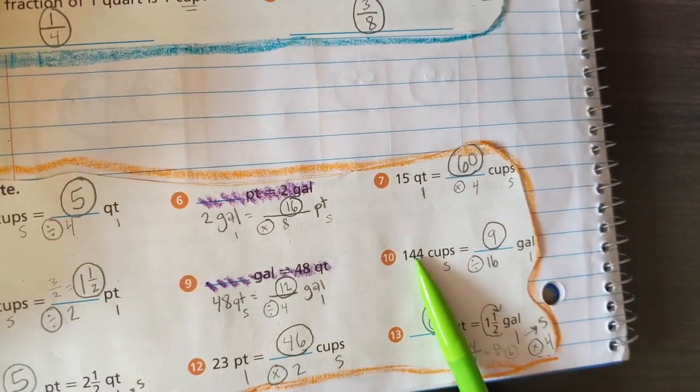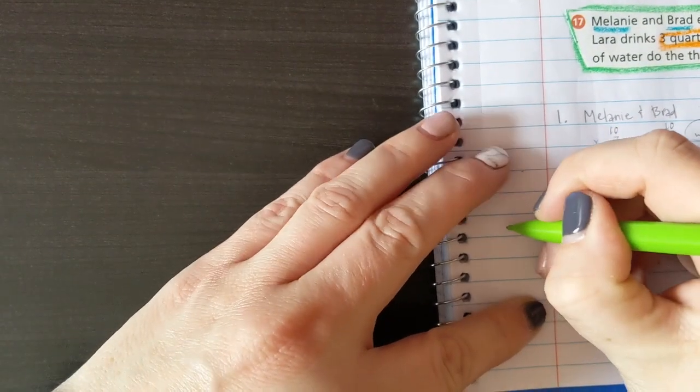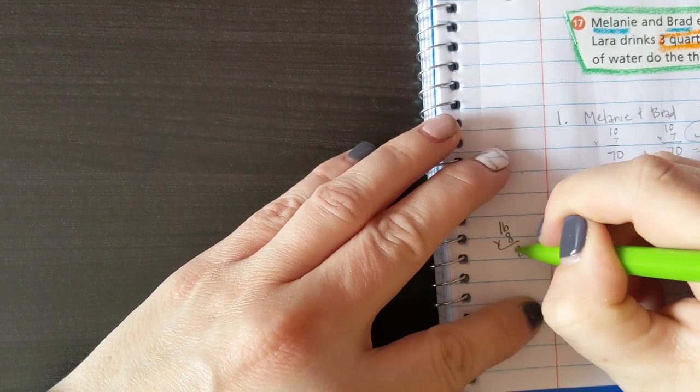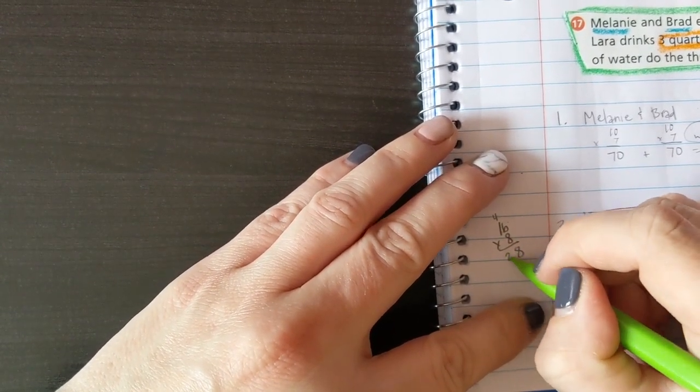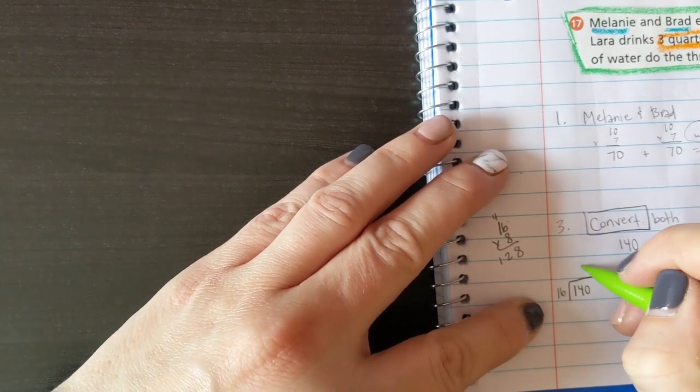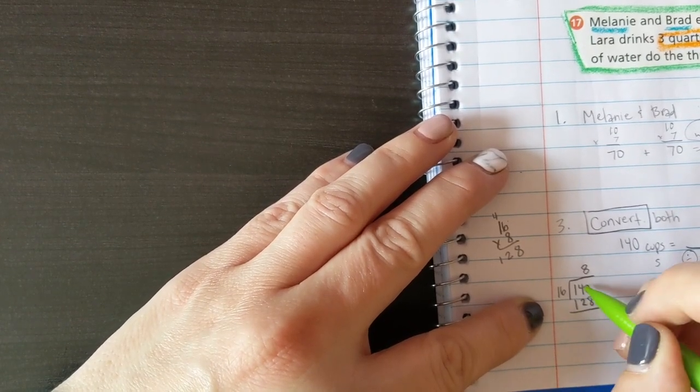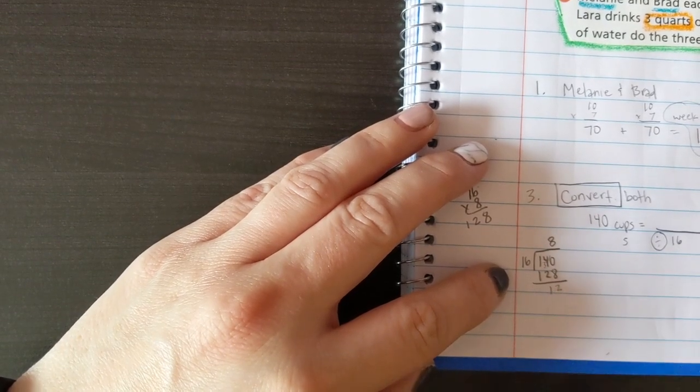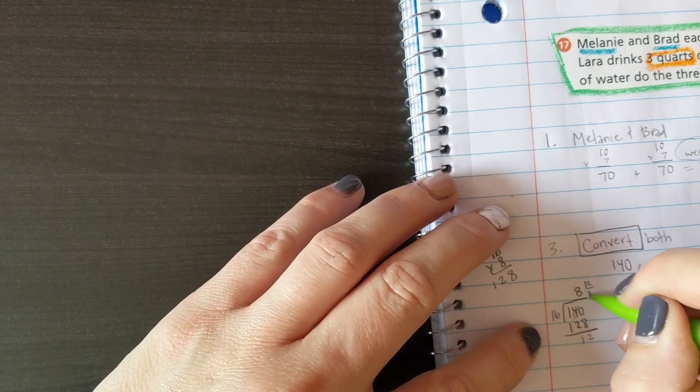If you remember a while ago, we did 16 times 9, I think, and it was 144. I'm not sure, but I'm pretty sure that was the number. 144, yeah. This one, remember, 144 divided by 16 was 9, so it can't be 9, so I might as well try 8 over here. 16 times 8: 8 times 6 is 48, 8 times 1 is 8 plus 4 is 12, 128, but I can't get more, so it is 8.